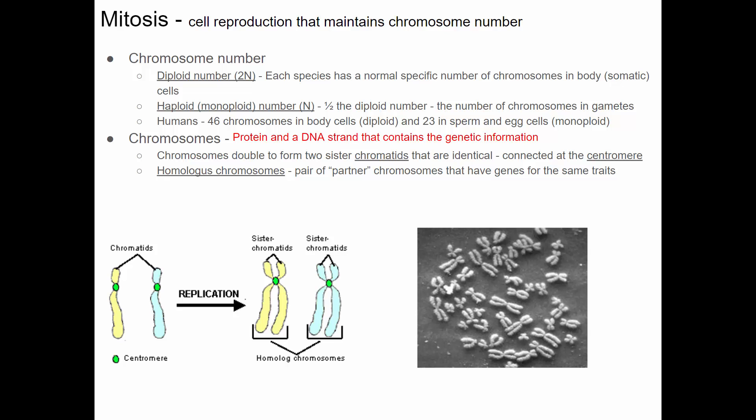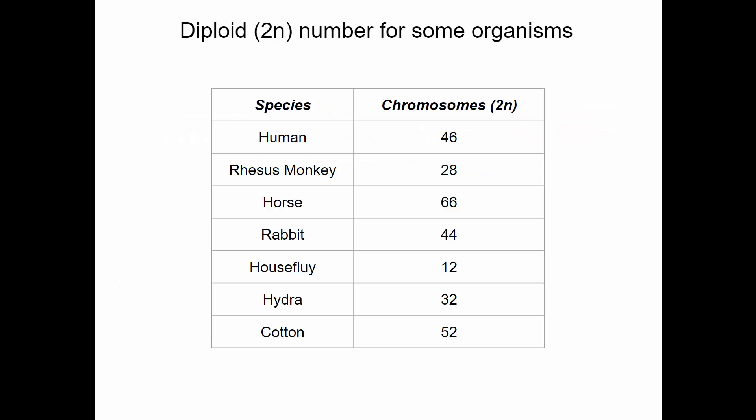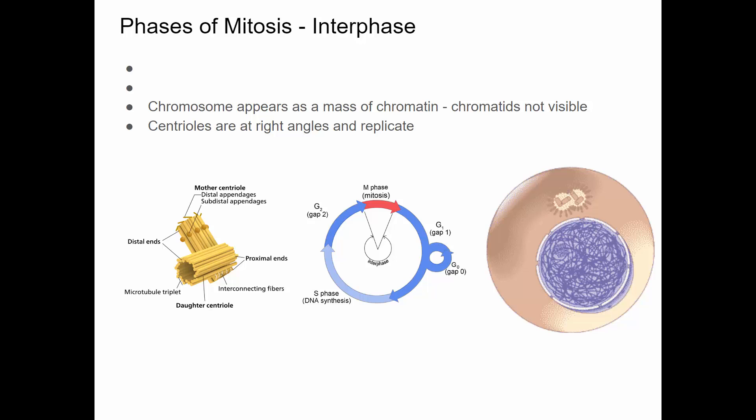As we follow the process of mitosis, we'll see eventually the two halves split apart from each other. To give you an idea, humans have a diploid number of 46, but other organisms have different numbers. The rhesus monkey has 66 chromosomes, cotton the plant has 52, and a fly has 12. But the number is really meaningless — it doesn't indicate the complexity, intelligence, or size of the organism. It's just a number that has evolved over time.